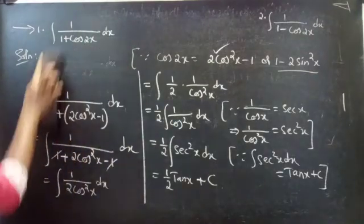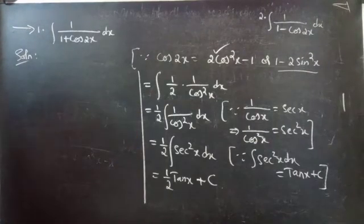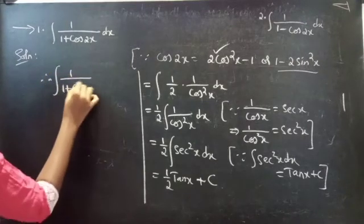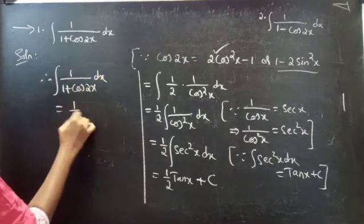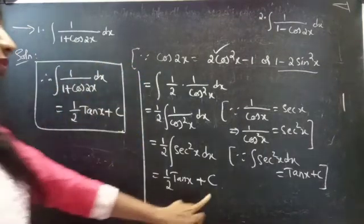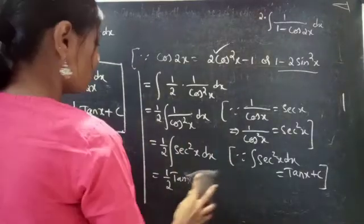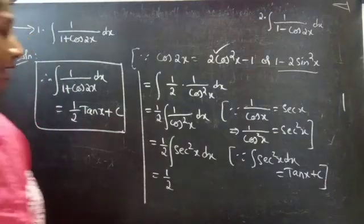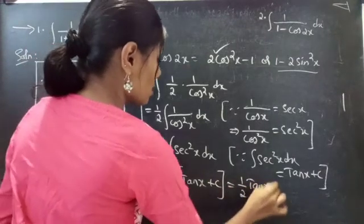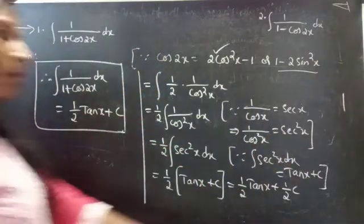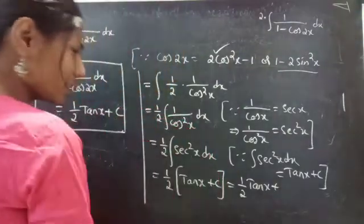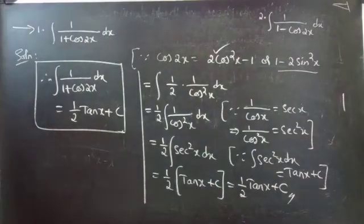Therefore, the integral of 1/(1 + cos2x) dx equals (1/2)tanx + C. You may wonder why we write +C here: if we replace the integral of sec²x by tanx + C, we get (1/2)(tanx + C) = (1/2)tanx + (1/2)C. Since (1/2)C is also a constant, we simply write C. No need to get confused.